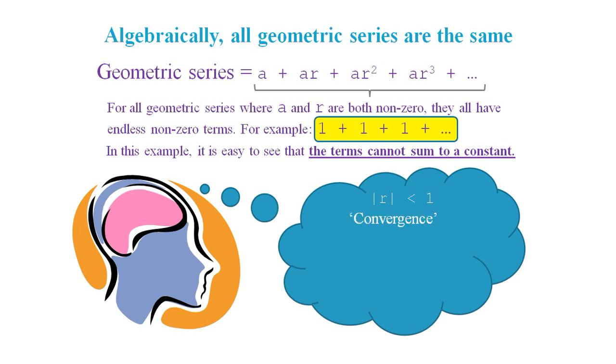We even give this imagination a name. We call it convergence. Then we reinforce this idea by accepting arguments for convergence that use infinity, such as the construction of so-called real numbers using Cauchy sequences or Dedekind cuts.